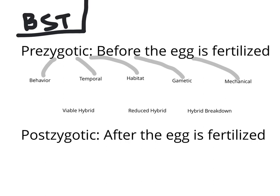Those all happen before the fertilization of the egg and prevent fertilization. However, a reduced hybrid viability means that the hybrid produced from fertilization will not be able to mate and have children — they are not fertile, they are sterile. A good example is when a donkey and a horse mate: they create a mule, but that mule is not fertile and cannot produce offspring.